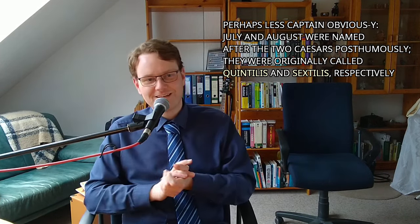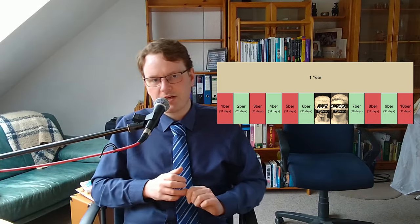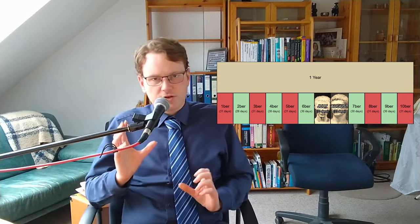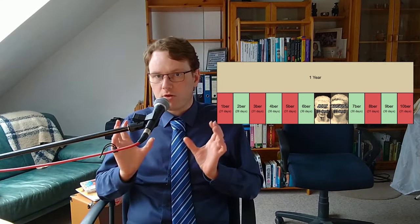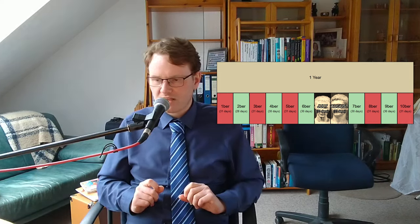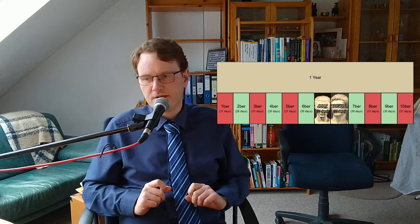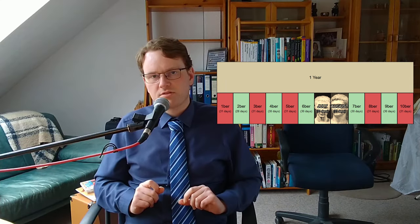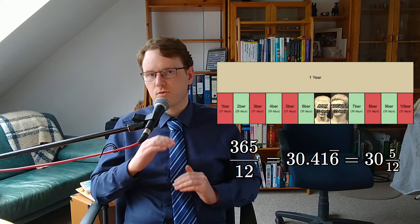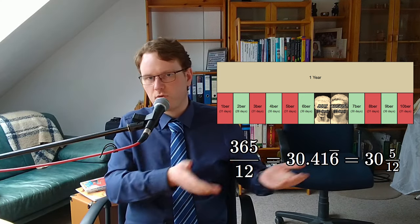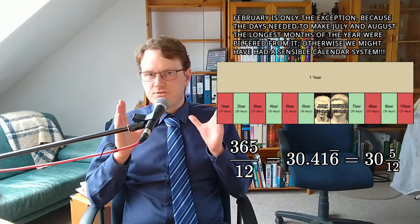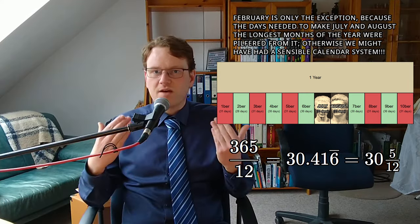Point of truth: the months July and August are indeed named after Julius and Augustus Caesar. This 12-month system that Augustus Caesar created also had July and August as the longest months in the year. The system turned out to have months of 30 to 31 days — February is, of course, the exception — and July and August both had to have 31 days.